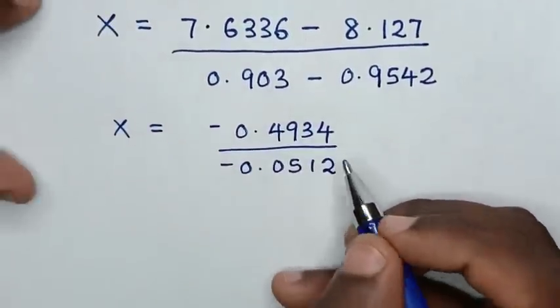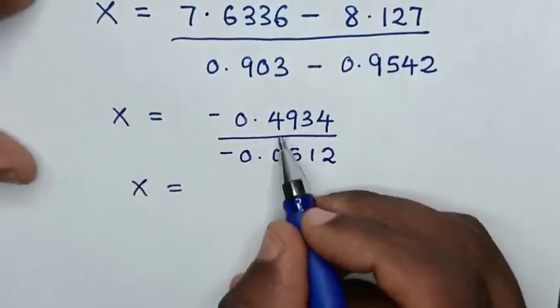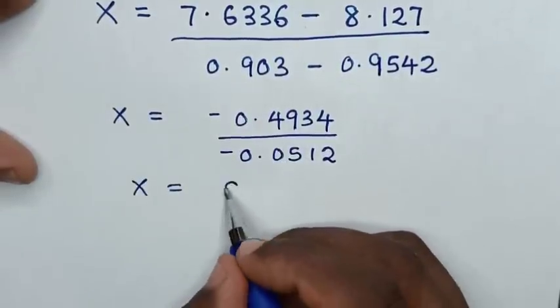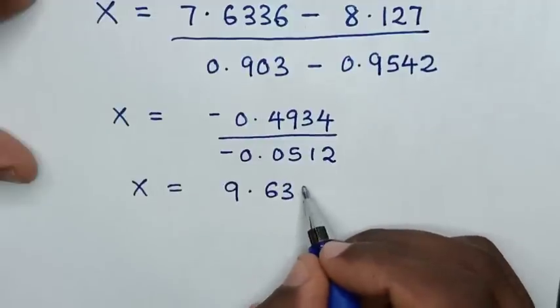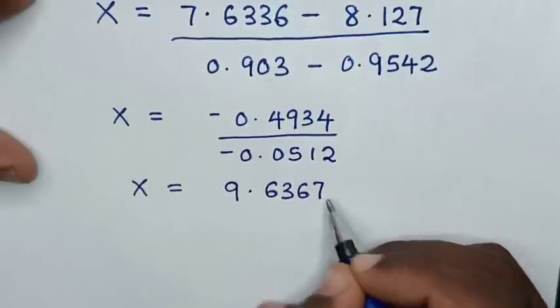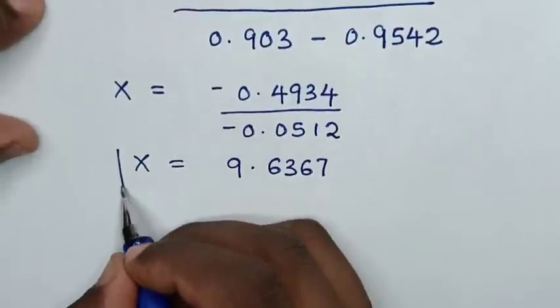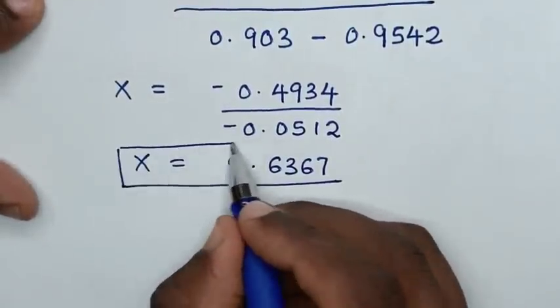Therefore, the value of x is equal to this divided by this, which is 9.6367. So this is the final answer for the value of x.